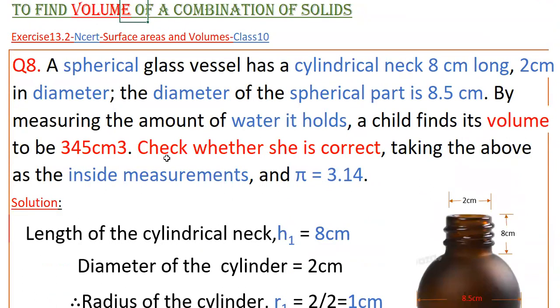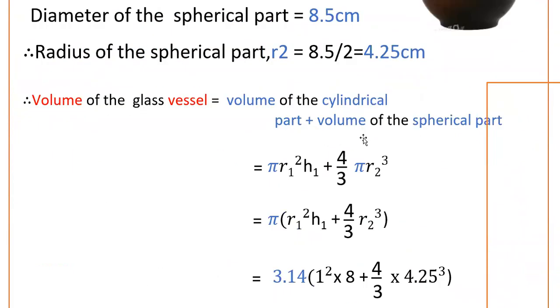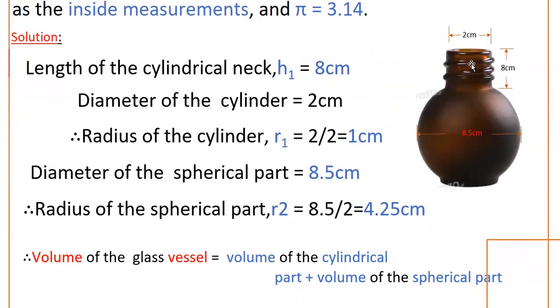And here the volume is given, that is 345 cm³. We have to check whether this volume is correct or not. So, volume of the glass vessel equals volume of the cylindrical part plus volume of the spherical part.